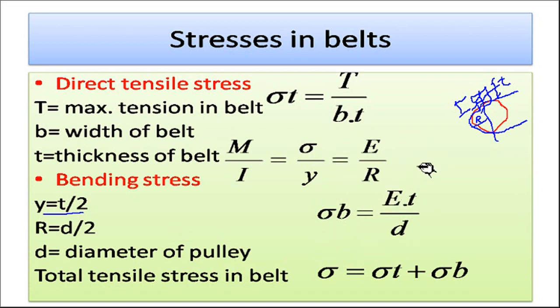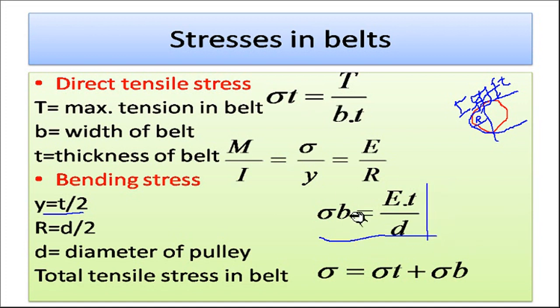So bending stress sigma_b = Et/d, and tensile stress is sigma_t. The addition of these gives the total stress acting on the belt: total stress = sigma_t + sigma_b. This total stress is used for the design of the belt. Here we will stop — thank you for listening to this video.